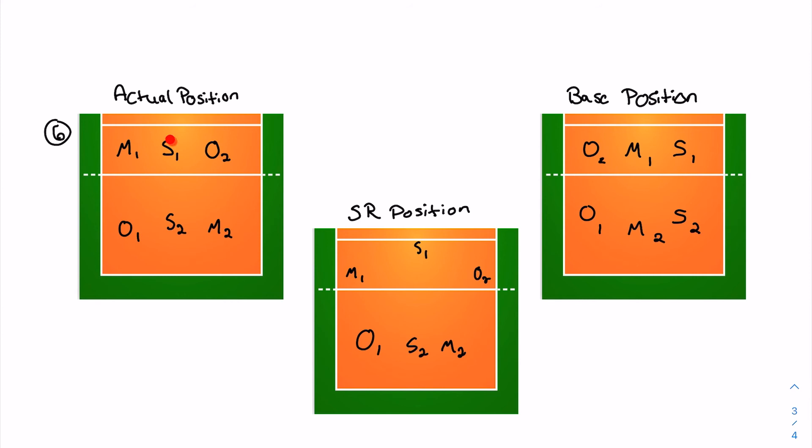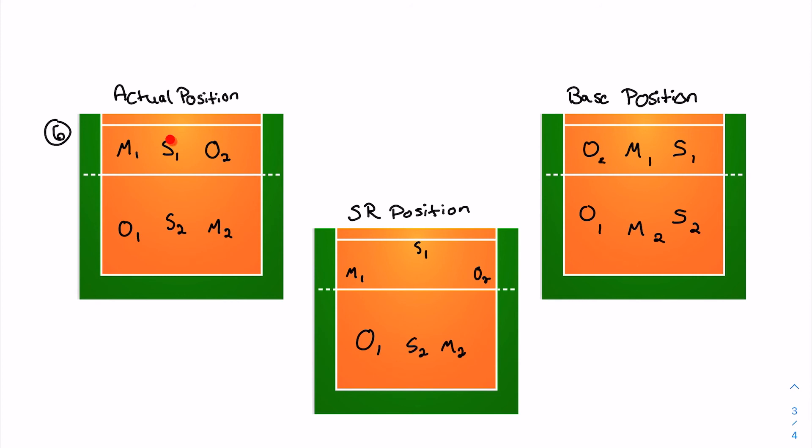And that sixth position does repeat that third one. You do have your two setters in the middle. Setter in the middle with your weak side and your outside attack, and then obviously your middle will transition back to the middle, and your outside will transition over once the ball goes over. And then again, the big switch between your middle and your setter in the back row to make it easy for them to get to the positions they need to be.